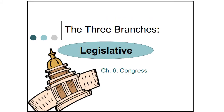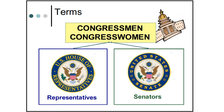We'll begin with the legislative branch, corresponding with Chapter 6 of your textbook. First, we want to go over some terms. In the legislative branch, we have both representatives from the House of Representatives and the U.S. Senate, which has senators. The people who work in both the U.S. House of Representatives and the United States Senate are called congressmen and congresswomen.